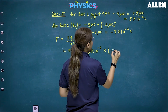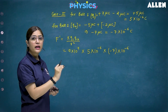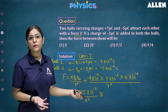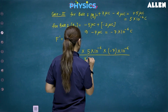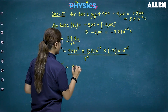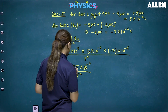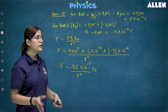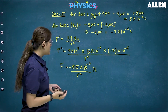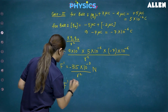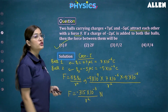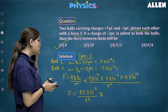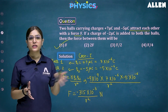Substituting into the formula: F dash equals K times 5 times 10 to the power minus 6, times 7 times 10 to the power minus 6, upon R squared, giving 315 times 10 to the power minus 3 upon R squared. Since the charges are still opposite in sign, they still attract. Therefore F dash equals F. The answer is that the force remains F. This concludes our discussion of Coulomb's Law — please practice solving questions based on this formula.